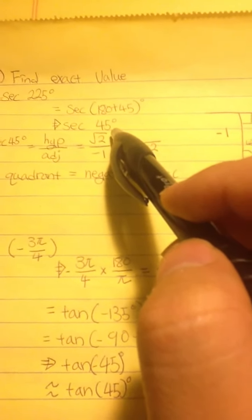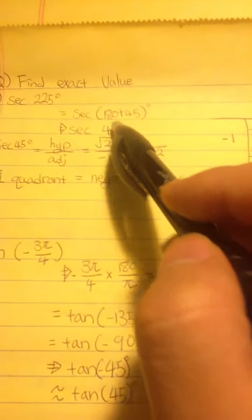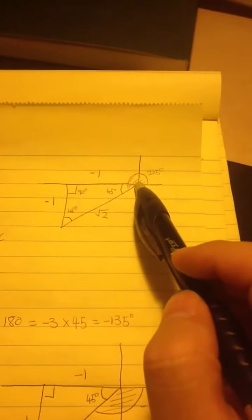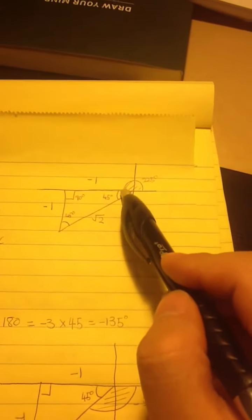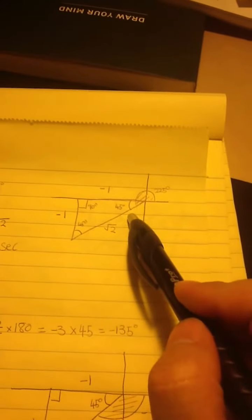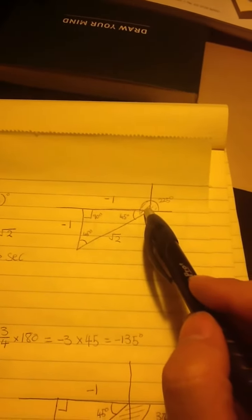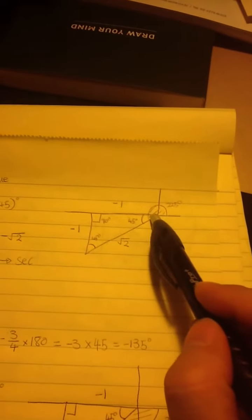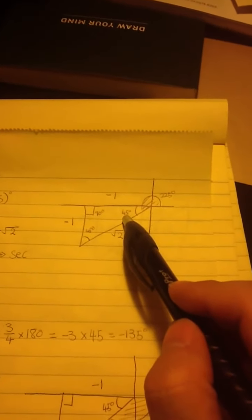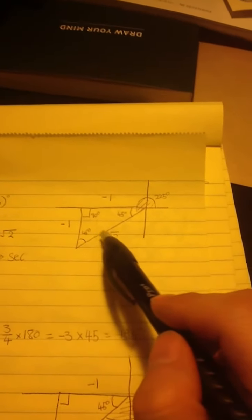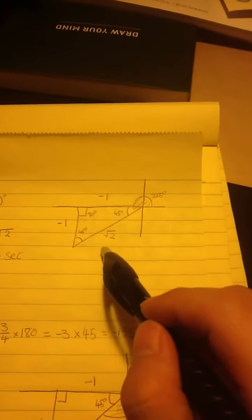And then I write this and draw the triangle using the reference angle in the graph. Here, this is 225 degrees, and the reference angle is this, 45 degrees. And the triangle that I draw using the reference angle. In a 45 degree triangle, adjacent and opposite is 1, and the hypotenuse is the square root of 2.